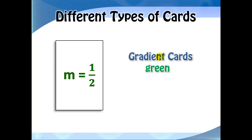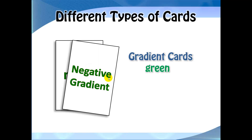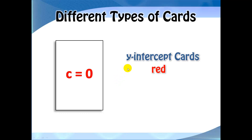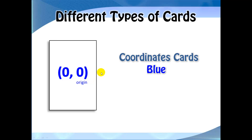The next type of card is called the gradient cards. These cards have words written in green. This is another form of the gradient card — you can identify them through the colors. For the y-intercept cards, the words are written in red. For coordinates cards, we have cards written in blue.